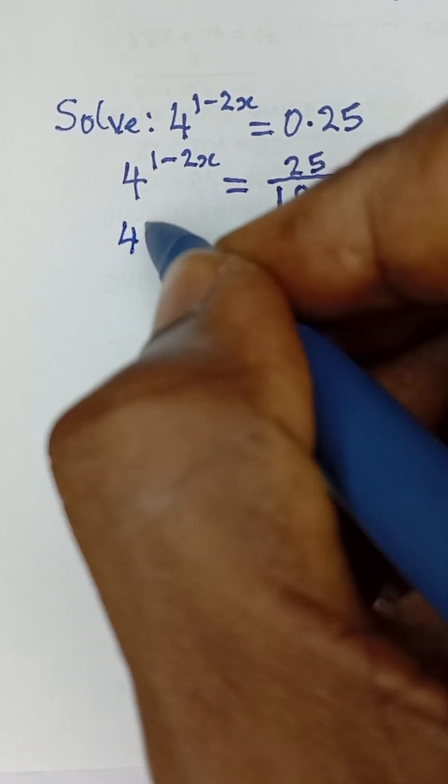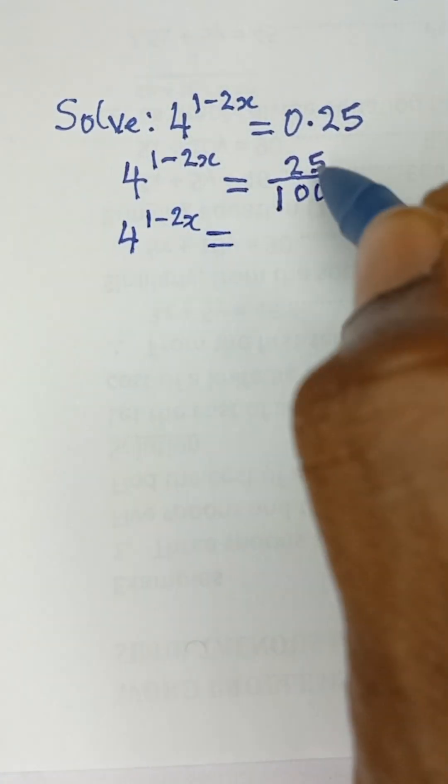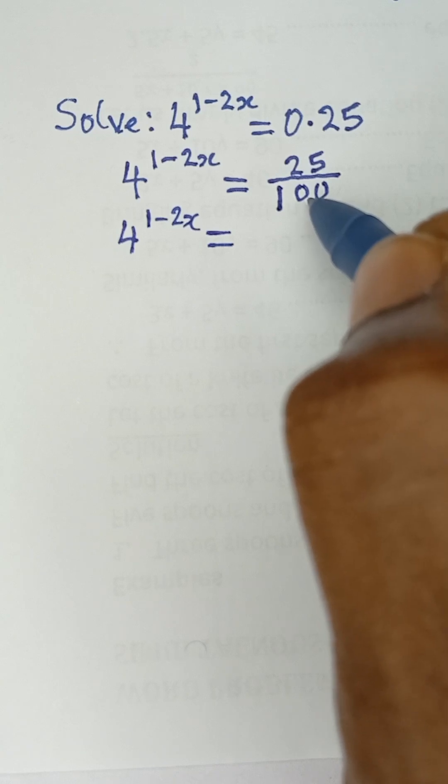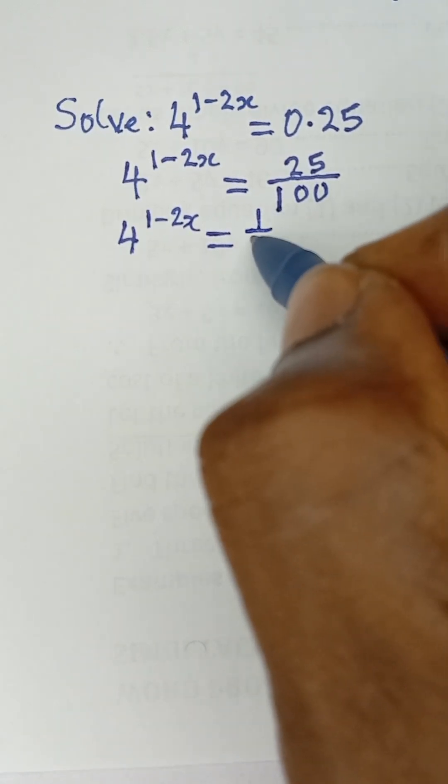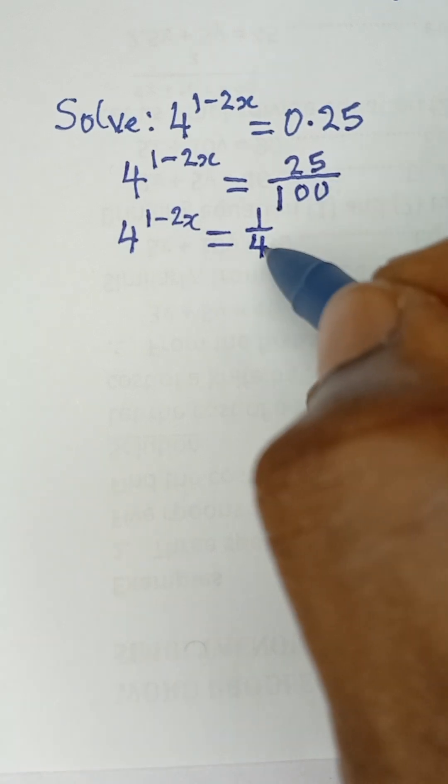So 4 raised to the power 1 minus 2x will be equal to 25 over 100, which is the same as 1 over 4, because 25 in 25 is 1, and 25 in 100 is 4.